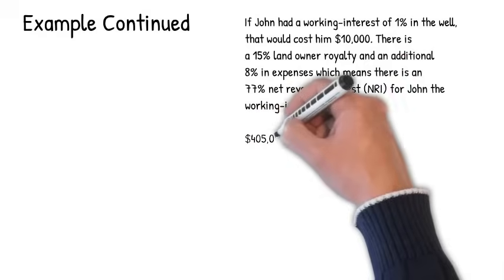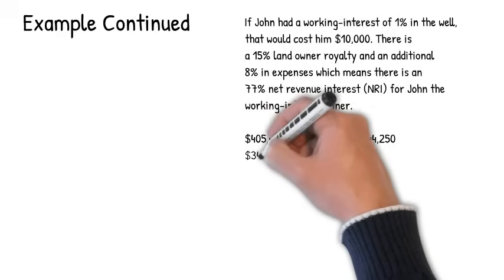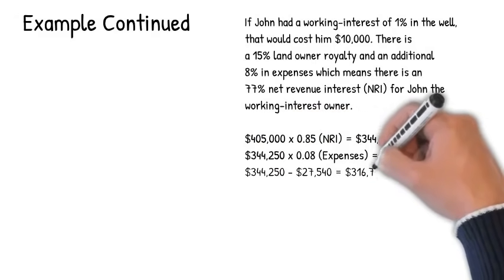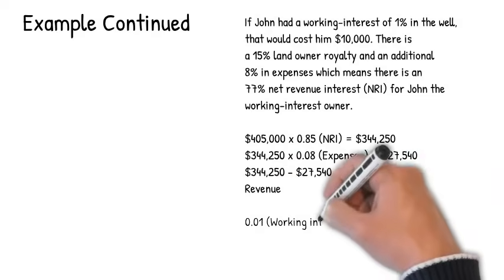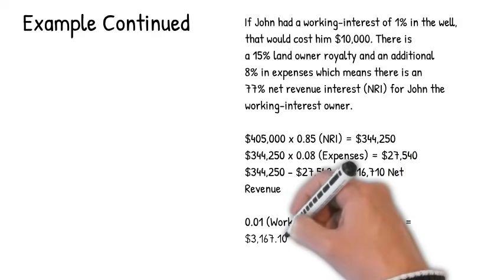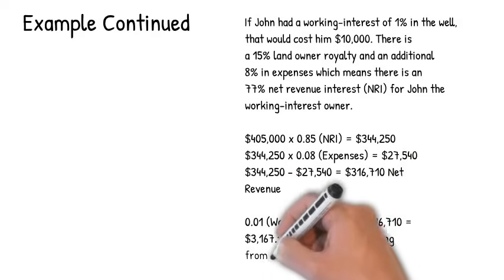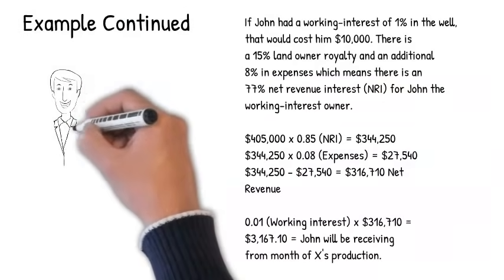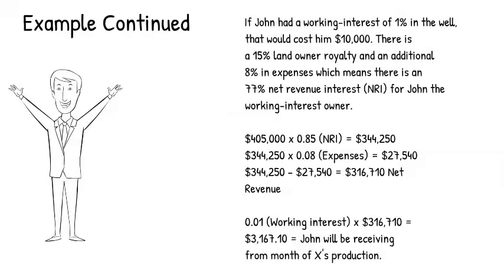Then we will do the revenue times the NRI. It will come out to $344,250. You include the expenses. That comes out to $27,540. Subtract that from the NRI and that will come out to $316,710 for the net revenue. So you'll do John's 1% working interest times the net revenue and then you'll see that John will be receiving $3,167.10 from month of X production.